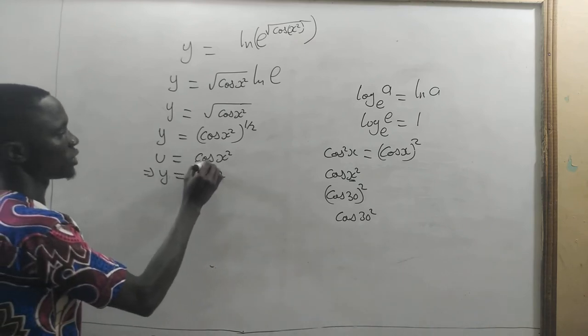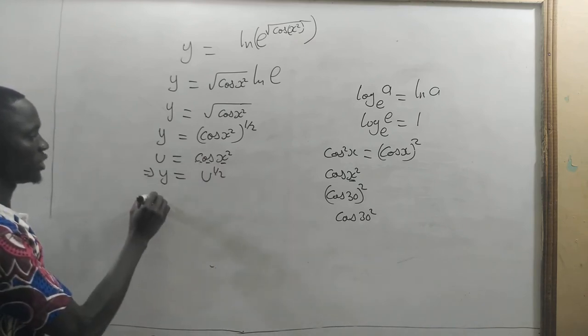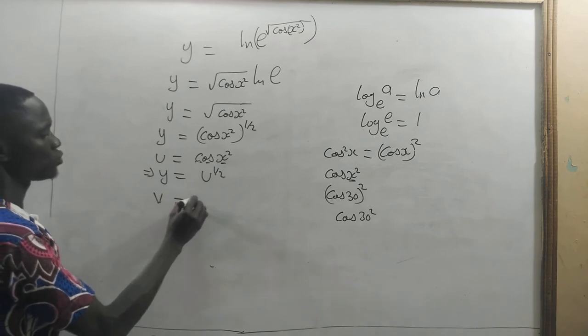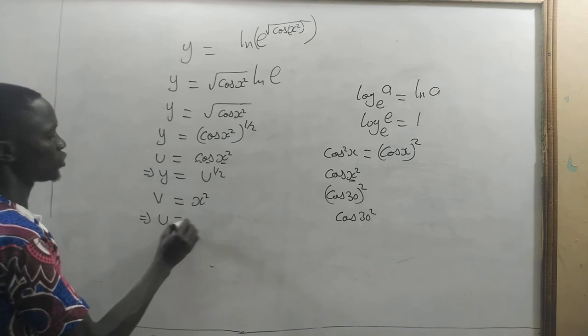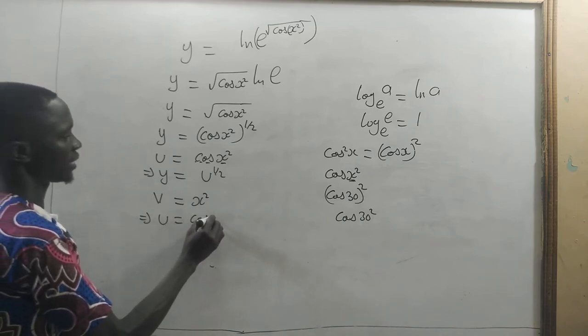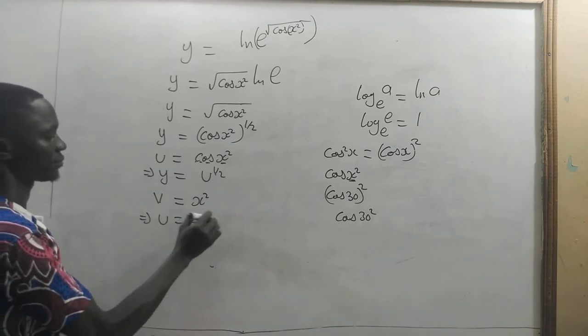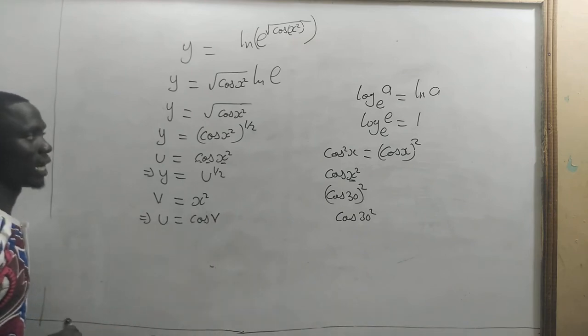Now, this one too is the function of a function. So if we take v to be equal to x squared, we are going to have u to be equal to cosine v. So now, how do we find our dy/dx?